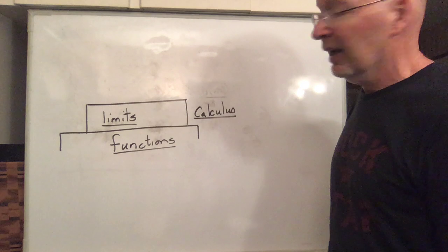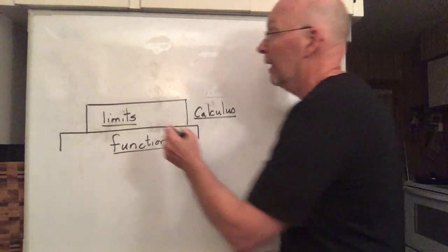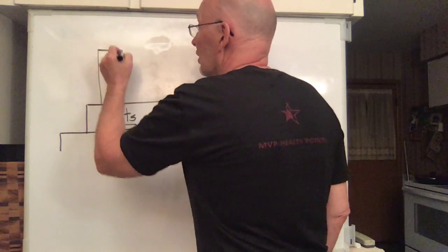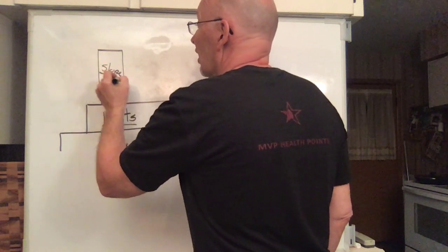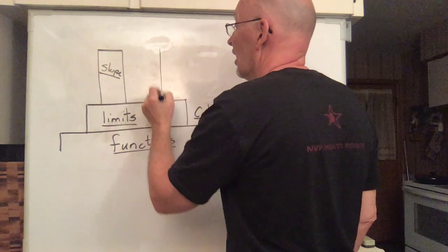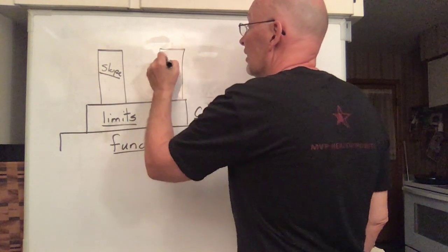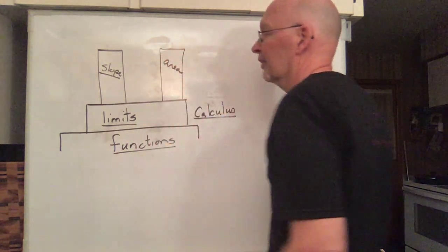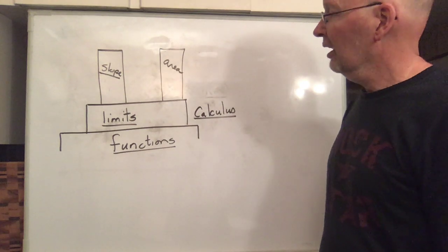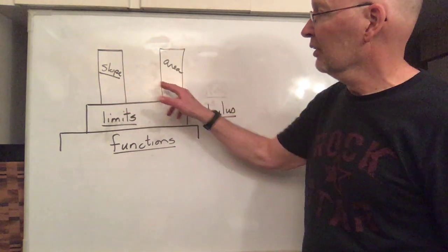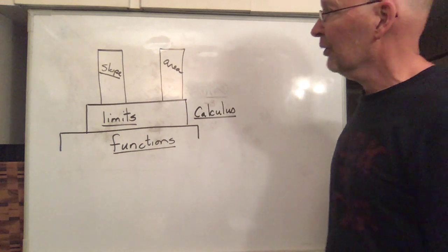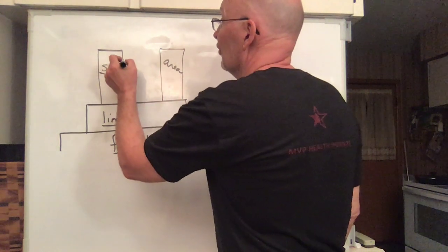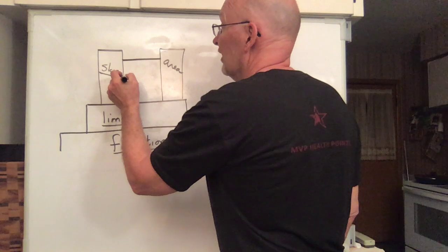And then once you have this idea of limits down, the two things that I mentioned to you that you can do are to find the slope of a curve, and to find the area underneath the curve. Those are the two things which we use limits for in order to solve in calculus. And then it turns out, rather surprisingly, that there is a result of theorem which relates those two. Kind of surprising. There's no reason to think that area and slope would have anything to do with each other, but it turns out they do.